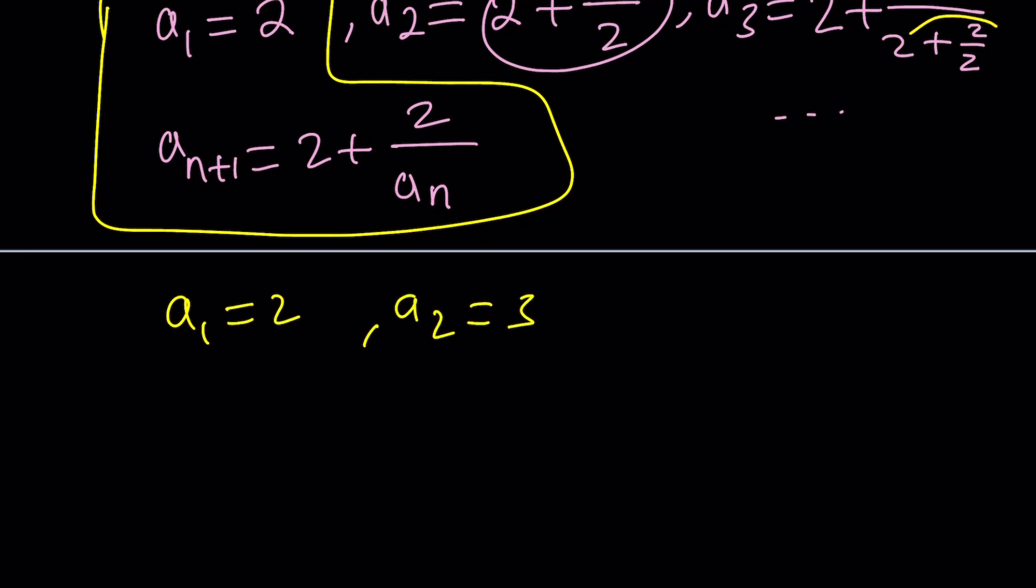Since this is 3, the next one is going to be 2 plus 2 thirds, which is 8 thirds. I'm going to show you some numerical values towards the end, but these are basically the first three values.